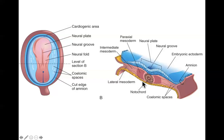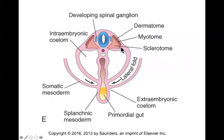On either side of the notochord in the mesoderm there is a thickening known as the paraxial mesoderm. This eventually breaks off into sections called somites. As the somites form, they differentiate into three different tissue types: the sclerotome layer, the myotome layer, and the dermatome layer. The sclerotome layer is going to become most of the axial skeleton and all of the appendicular skeleton. The axial skeleton is the center of the body — skull, spine, ribs, sternum — and the appendicular skeleton is the appendages, the arms and legs.